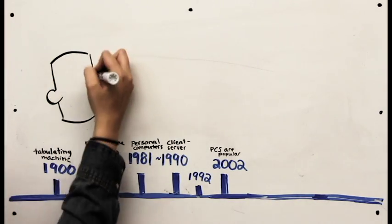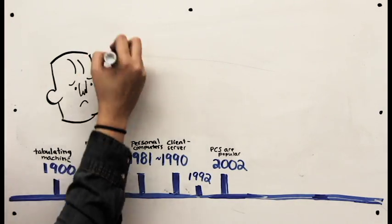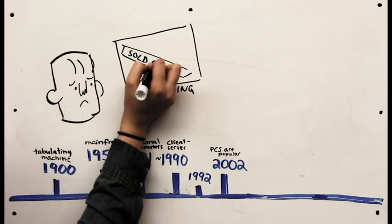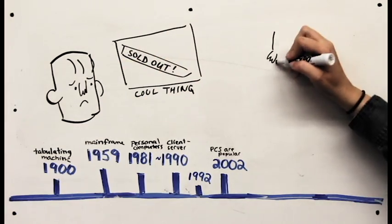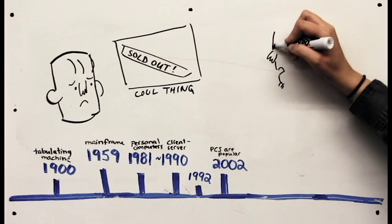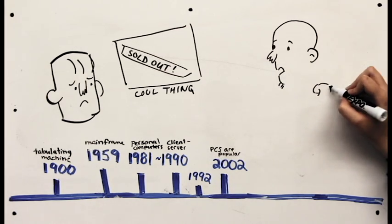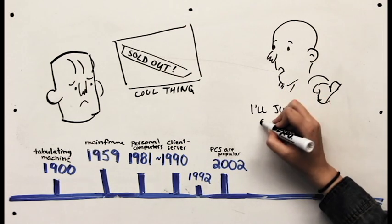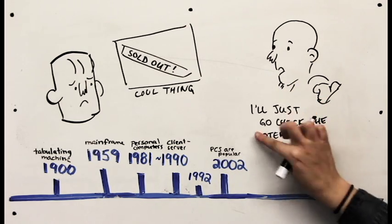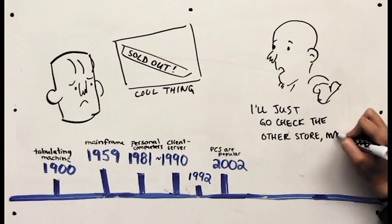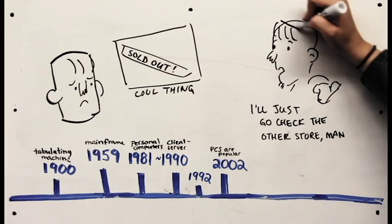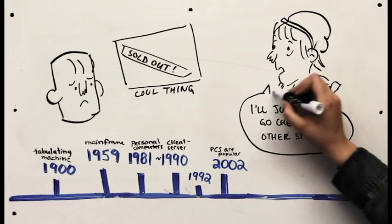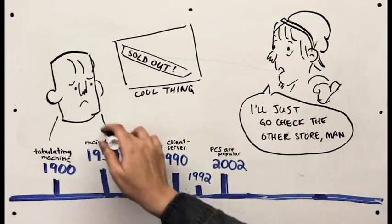Sound confusing? Think back to when you went to a store like Best Buy and were looking for a specific product but just can't seem to find it. The employee helping you says that they don't have the product in stock at this location but they will check on the computer to see if another store does. What the worker is actually doing is accessing Best Buy's database through the use of enterprise computing and looking at the other store's records to check what they have in stock.